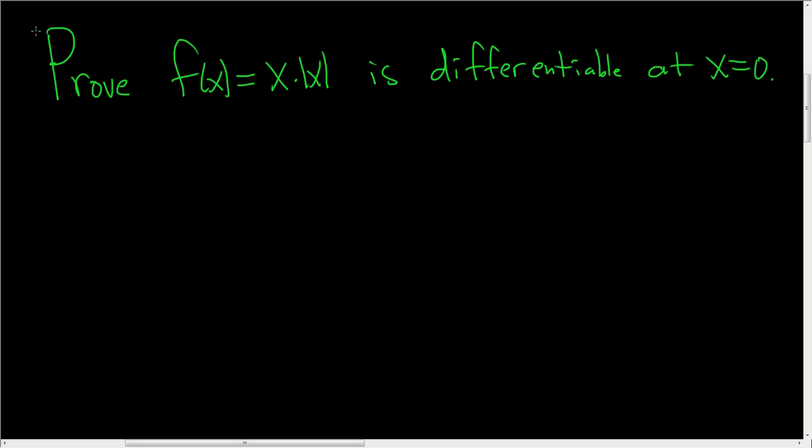Prove that f(x) = x|x| is differentiable at x = 0. So, proof. I haven't done this problem yet, but this should be differentiable at 0, so let's go ahead and try to prove it.